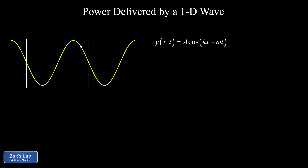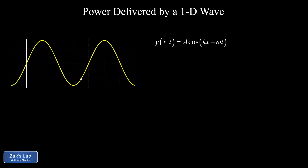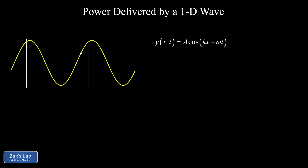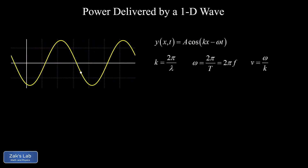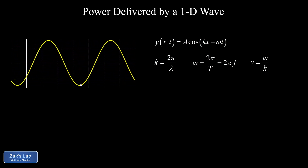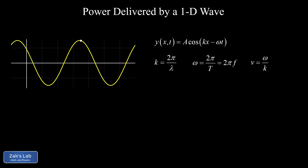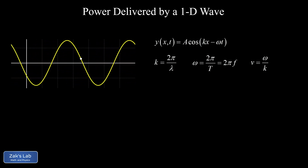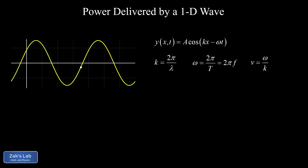The wave function turned out to be A cosine of kx minus ωt, where the minus sign indicates a rightward moving wave. To make a leftward moving wave, change that to a plus. A is the amplitude. k is the wave number, related to wavelength by 2π over λ. ω is the angular frequency, related to period by 2π over T, or equivalently 2π times frequency. The wave speed is given by ω divided by k.